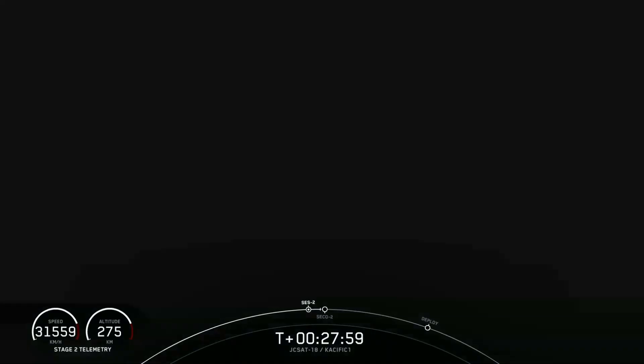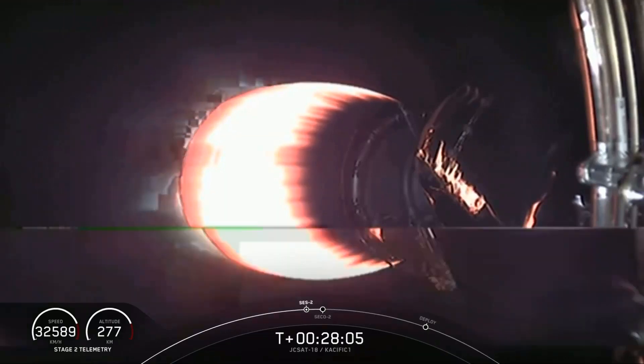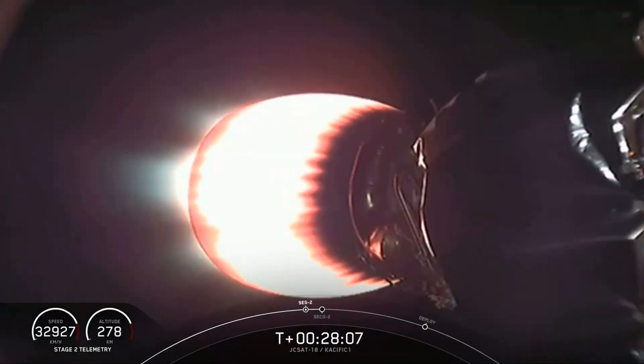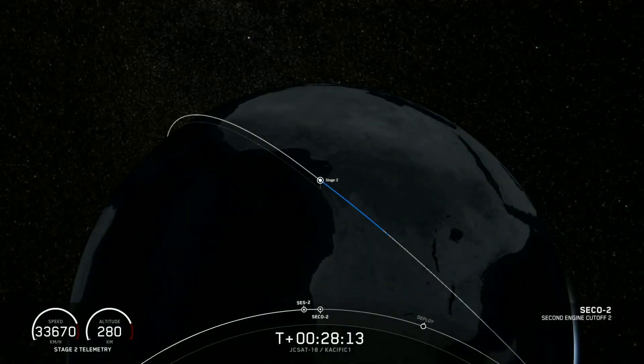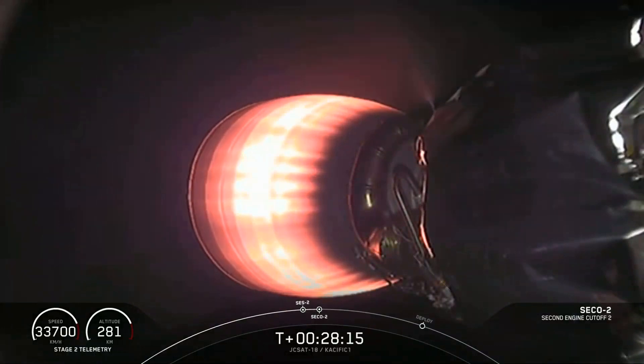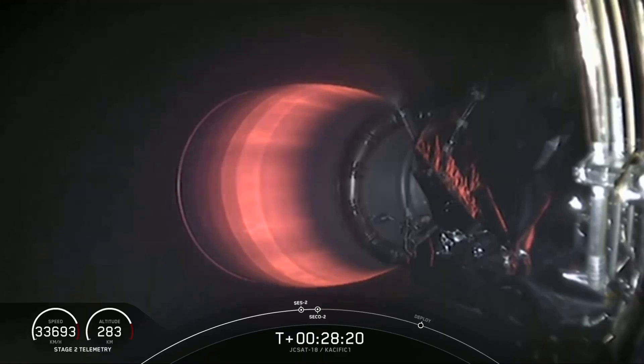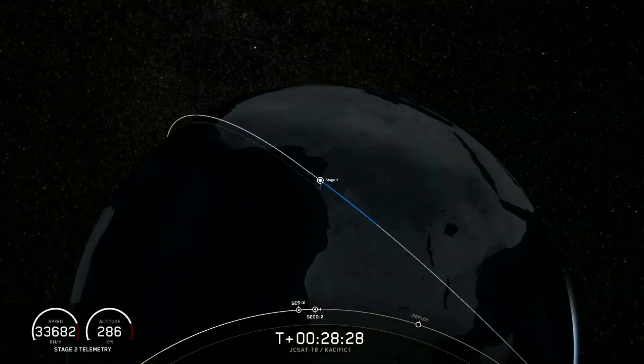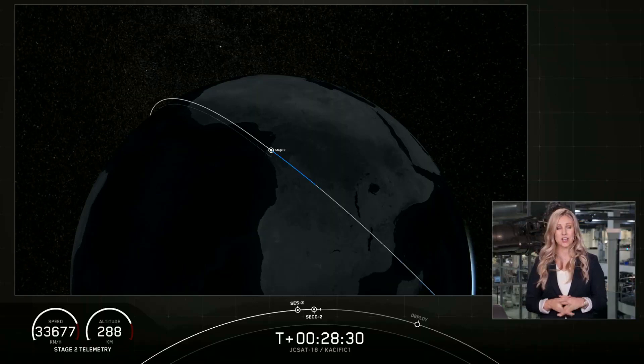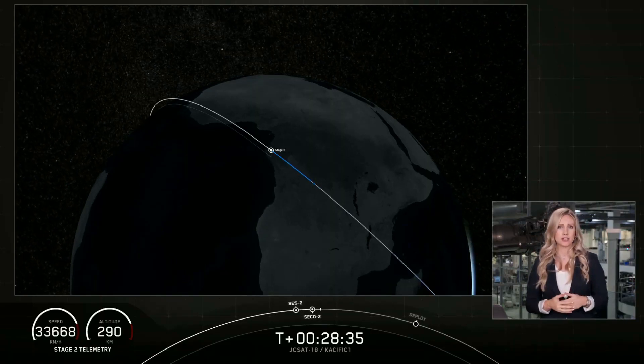We are waiting for second engine cutoff followed by good orbit. Fun fact: stage two is approaching the coast of Africa right now. Second engine cutoff as we lose the orange glow of MVAC. We have confirmation of good orbit. We will be coasting for the next five minutes, so we'll be back just before payload deploy.